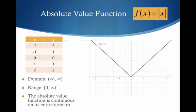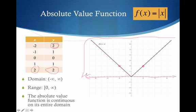The absolute value function — this is the V. For every x I plug in, I just get the positive equivalent. So if I plug in negative 2, my y is going to be positive 2. In the same way, if I plug in positive 2, my y is positive 2. So we get the coordinates negative 2, positive 2 and positive 2, positive 2. Our domain is negative infinity to positive infinity — note I'm in the first two quadrants. My range, however, is just 0 to infinity. And of course, absolute value is continuous.